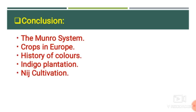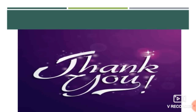To conclude today's session: we learnt the Munro system developed by Thomas Munro and started on a small scale by Captain Alexander Reed; the crops cultivated for Europe from different regions; the history of Indigo colors; and Nij cultivation. In the next part, we will learn the remaining systems. Read this chapter and write handwritten notes of whatever concepts you understood. Thank you and bye.